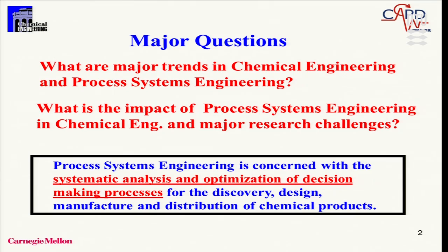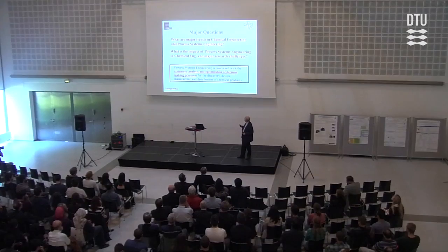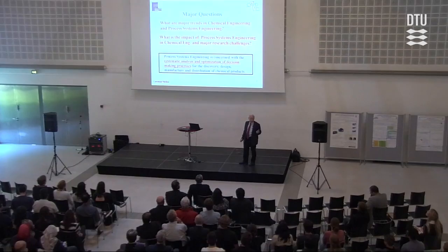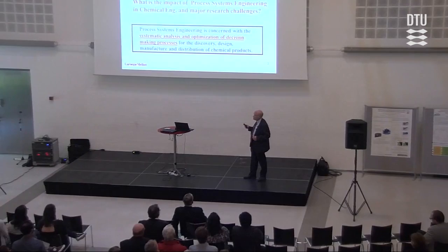In the spirit of introducing what we mean by process systems engineering, it's useful to review the definition: process systems engineering is concerned with the systematic analysis and optimization of decision-making processes for the discovery, design, manufacture, and distribution of chemical products. The emphasis is on systematic analysis and optimization — these are methodologies — and importantly, these methodologies support decision-making processes, which makes PSE different from other branches of chemical engineering.